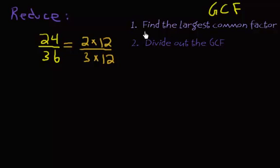Step 2 would be to divide out the GCF. So we have our GCF of 12, now it's on top and bottom. So we can cancel them out or divide them out. And once they're gone, take a look at what's left over, and we have 2 over 3. And you would just check, does 2 and 3 have anything in common? Well, they don't, there's no common factors between 2 and 3. So here is our reduced fraction.